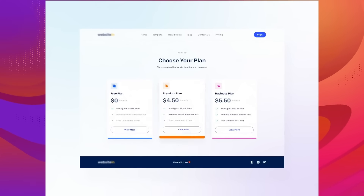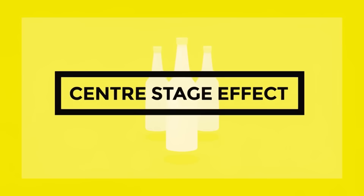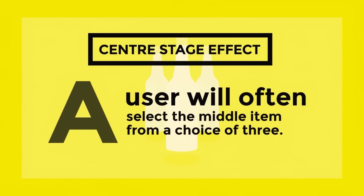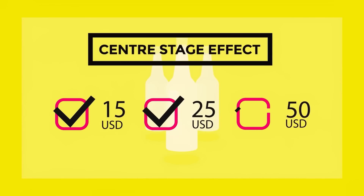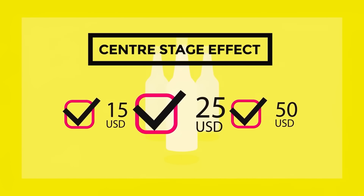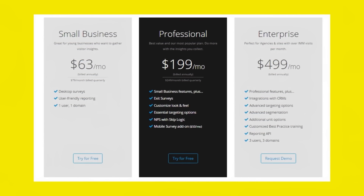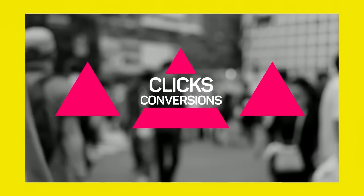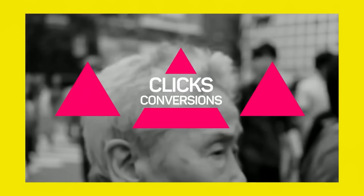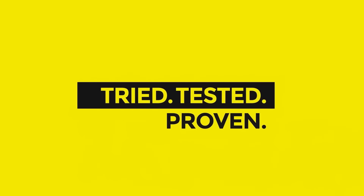The next method is called the center stage effect. It states that a user will often select the middle item from a choice of three. Say there are three price plans — $15, $25, and $50 — the middle one at $25 would appear to stand out more. The designer might make it taller, brighter, and bolder to leave the viewer subconsciously wanting to choose the middle option. It won't work on everyone, but this middle choice will gain significantly more clicks and conversions — it's a tried, tested, and proven method.